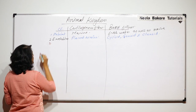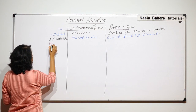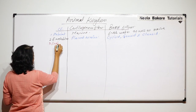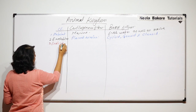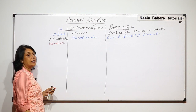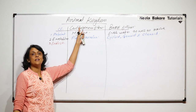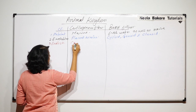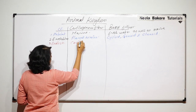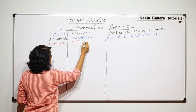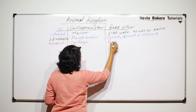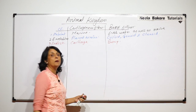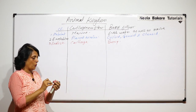The third characteristic is endoskeleton, and because of this the groups have been given their names. In cartilaginous fishes the endoskeleton is made up of cartilage, whereas in bony fishes the endoskeleton is made up of bones.